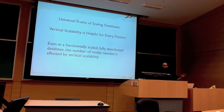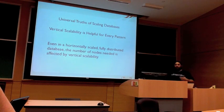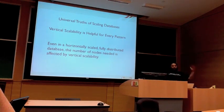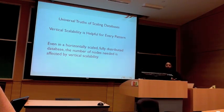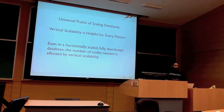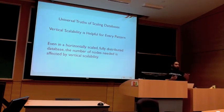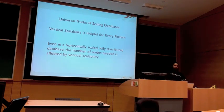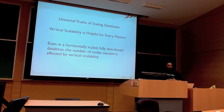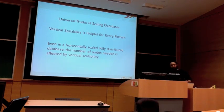I want to try to cover what I call the universal truths of scaling databases. One thing is that looking at getting good vertical scalability out of individual nodes is helpful for every pattern. Whether you're doing swim lanes, hash algorithms, or SOA, the more performance you can get out of an individual node, the better off you are in the long run. The better performance you can get from a single node, the fewer nodes you need overall, and the easier it is to maintain the system.